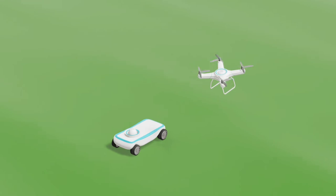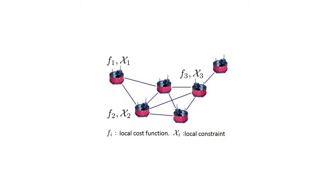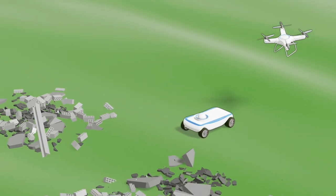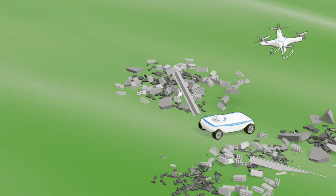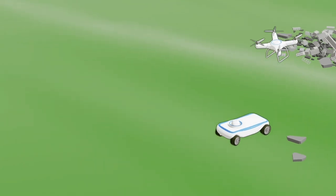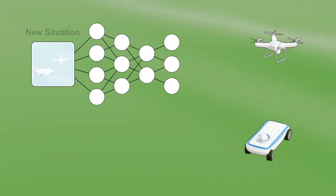Theoretical research in our lab mainly focuses on distributed control and optimization of multi-agent systems. First, we develop distributed algorithms for optimization in multi-agent networks, in which each agent has an objective function subject to some local constraints, and we develop algorithms so they can coordinate with each other mainly through nearby neighbors to minimize the sum of objective functions.